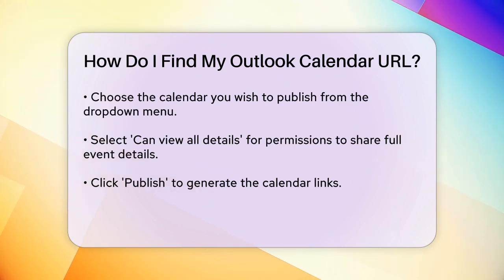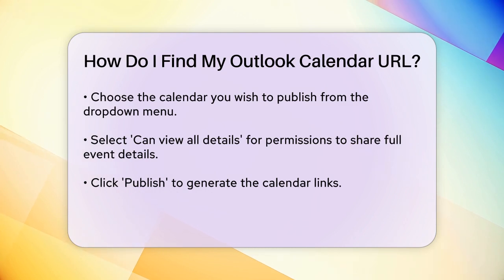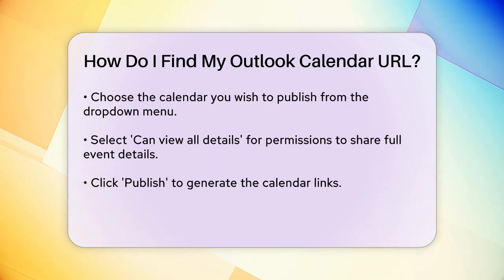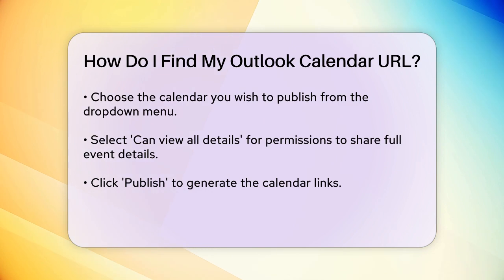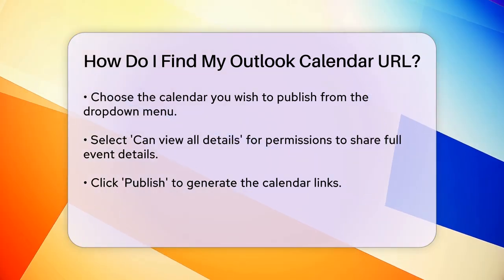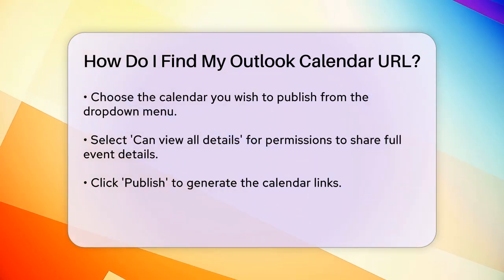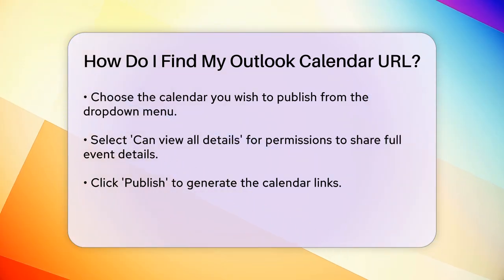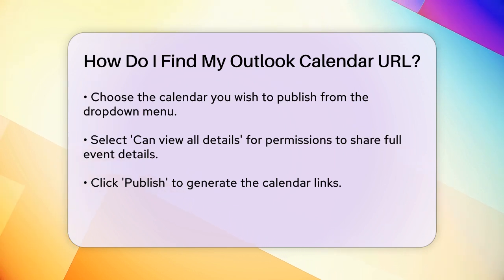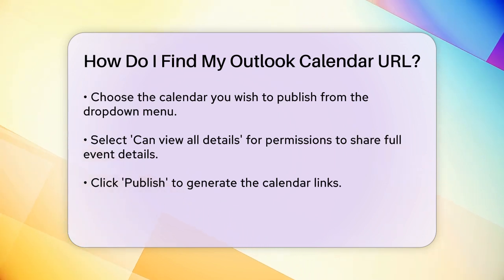Outlook will then display two links for your calendar: an HTML link and an ICS link. For most purposes, you'll want to copy the ICS link. Click on the ICS link and select Copy Link to get the URL.